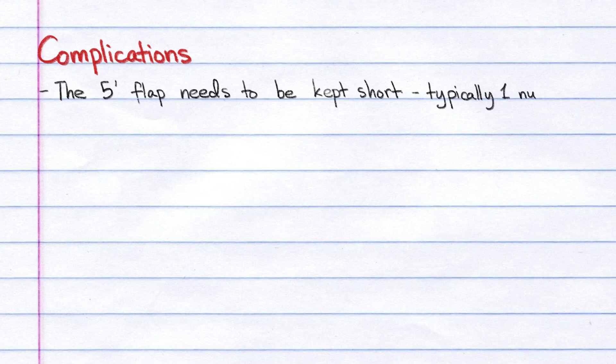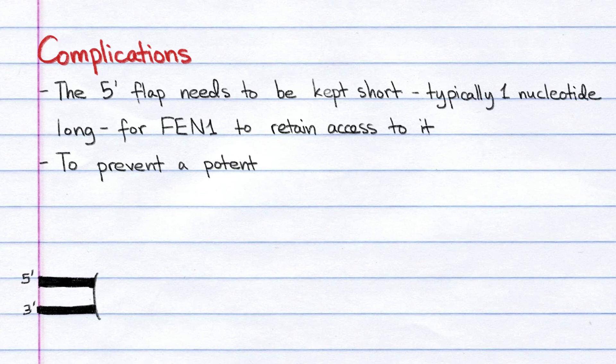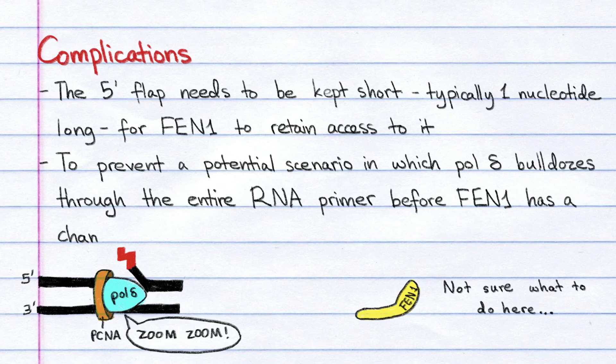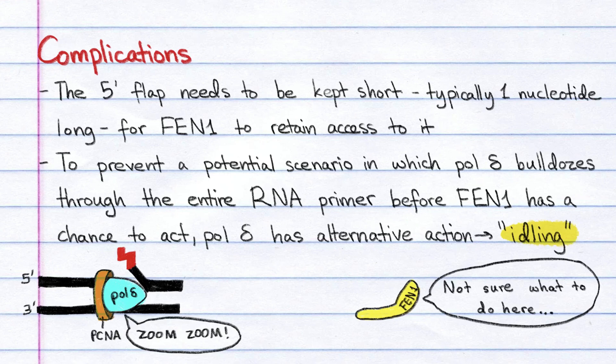However, this process has slight complications. The 5' flap needs to be kept short, typically only a nucleotide long, for FEN1 to retain access to it. To prevent a potential scenario in which pol-delta just bulldozes through the entire RNA primer before FEN1 has a chance to act, pol-delta has developed an alternative action called idling.